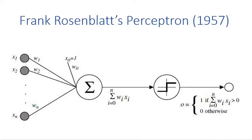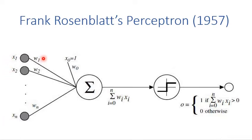Inspired by the biological neuron, Frank Rosenblatt developed the first prototype of a neuron called the perceptron in 1957. The perceptron uses a weighted sum — sigma represents sum and the weights are w. The perceptron uses the weighted sum to represent dendrites and a threshold to control the action potential. The inputs are x1 to xn, each with a corresponding weight w1 to wn. One special input is x0 which equals 1, and the weight w0 is used as a threshold, or sometimes called bias.